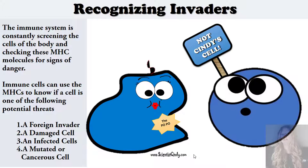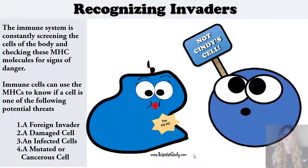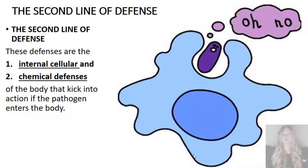The immune system is constantly screening the cells of the body, checking for these MHC molecules, looking for any signs of foreign invaders or any signs of danger. Immune cells can use the MHCs to know if a cell is one of the following potential threats: a foreign invader, a damaged cell, an infected cell, or even a mutated or cancerous cell. Our second line of defense is our body's internal cellular and internal chemical defenses.